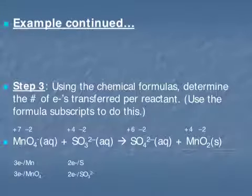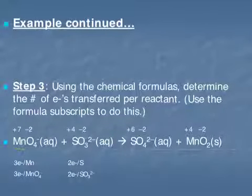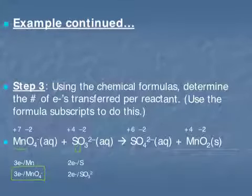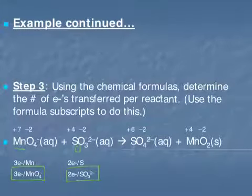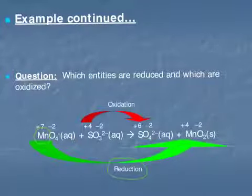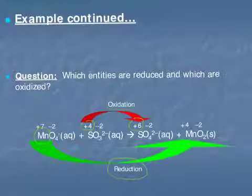Our next step is to determine the number of electrons transferred per molecule. Because there's only one manganese atom in permanganate, there are 3 electrons transferred per permanganate ion. Because there's only one sulfur per sulfite molecule, there are 2 electrons transferred per sulfite. Manganese is gaining electrons so it's being reduced; sulfur's oxidation number is increasing, so it is being oxidized.